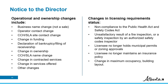Examples of changes to licensing requirement status include non-compliance to the Public Health Act and Safety Codes Act, unsatisfactory result of a fire inspection by a fire inspector, unsatisfactory result of a safety inspection by an authorized safety codes officer, the licensee no longer holds municipal permits or zoning approvals, the licensee no longer maintains an insurance policy, a change in maximum occupancy, or change in building layout.